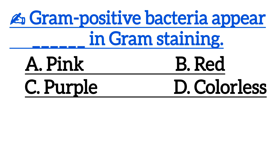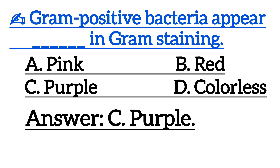Next one is: gram-positive bacteria appear in which phase during gram staining? Correct answer is option C, purple.